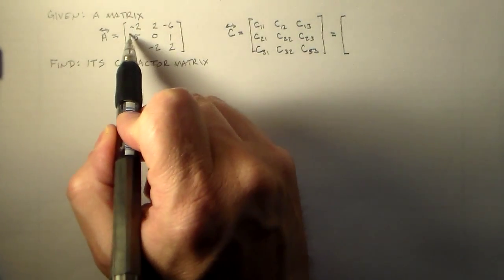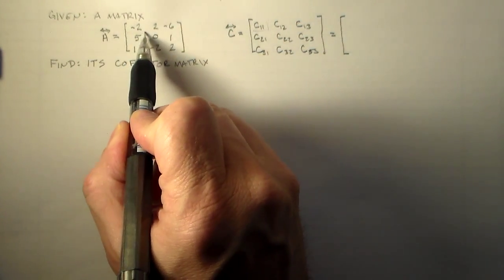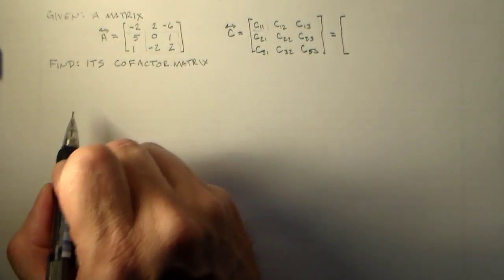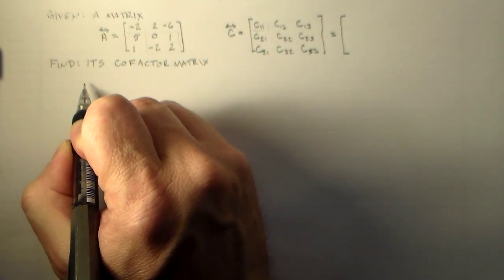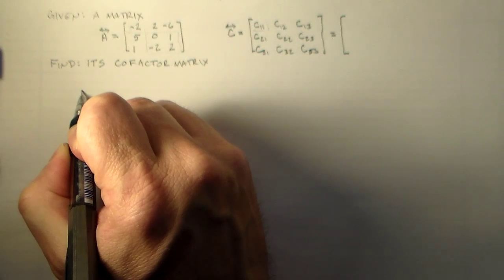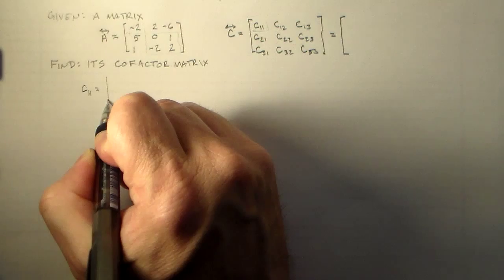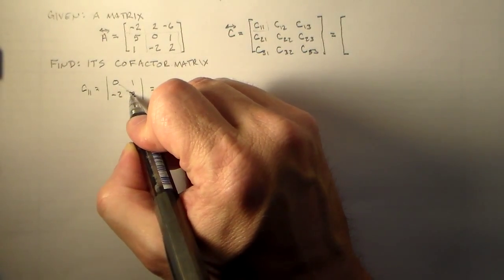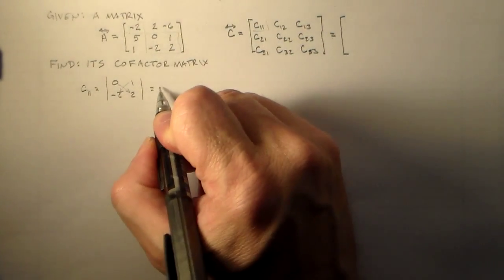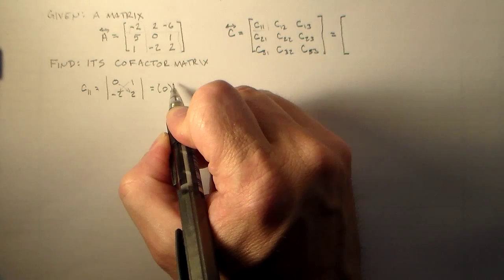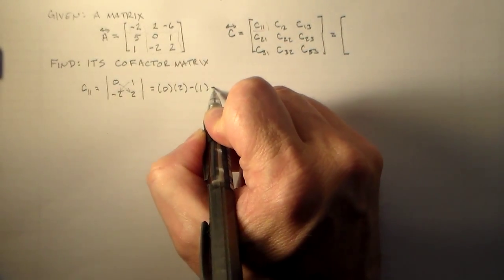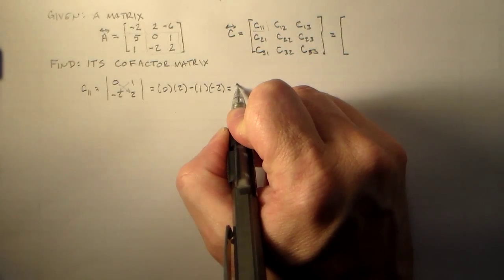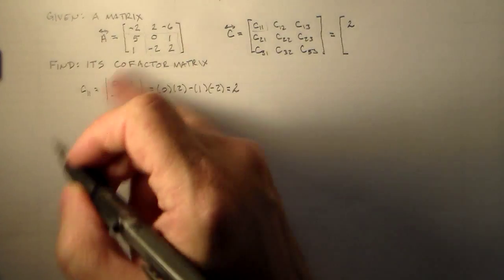And the best way to do is to start at one, the very first one. So we want to find this cofactor. So we want to find the cofactor here, which means we look at this submatrix here, 0, 1, minus 2, 2, and find its determinant. So that is C11 is equal to 0, 1, minus 2, 2. And here we just multiply these and subtract the product of these. So that's 0 times 2, minus 1 times minus 2, which is equal to 2. So we have a 2 right there.